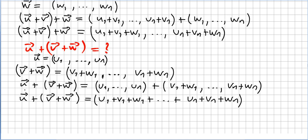So what is u plus v plus w? Well, that's vector u plus the addition of v plus w. That's v1 plus w1, v2 plus w2, etc., till vn plus wn.